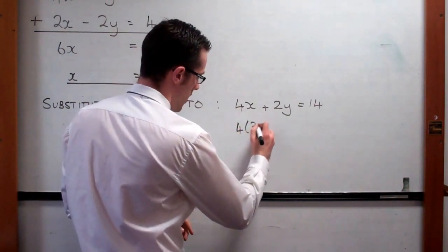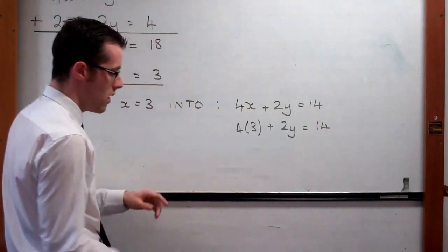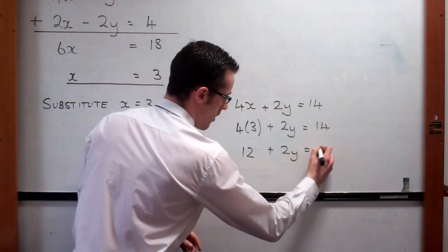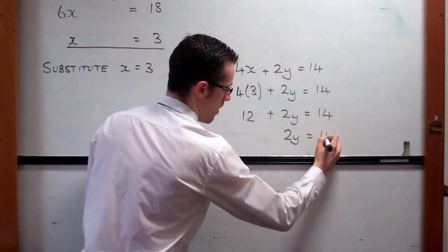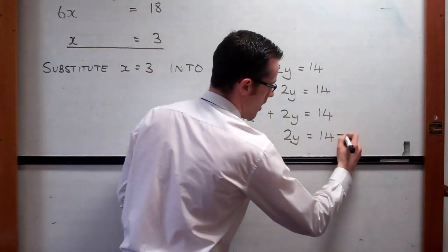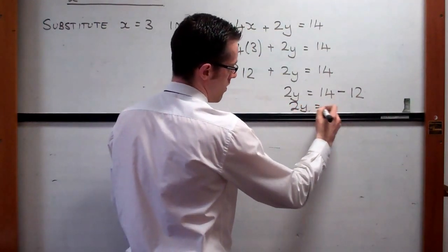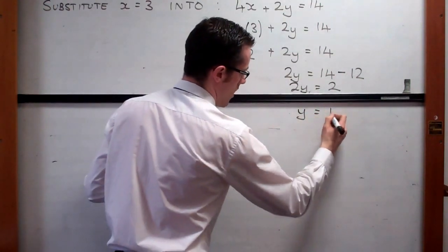So we have 4 times 3 plus 2y equals 14. That's 12. So 12 plus 2y equals 14. 2y equals 14, bring that over, take away 12. I'm running out of board. So 2y is 2. So then y is equal to 1.